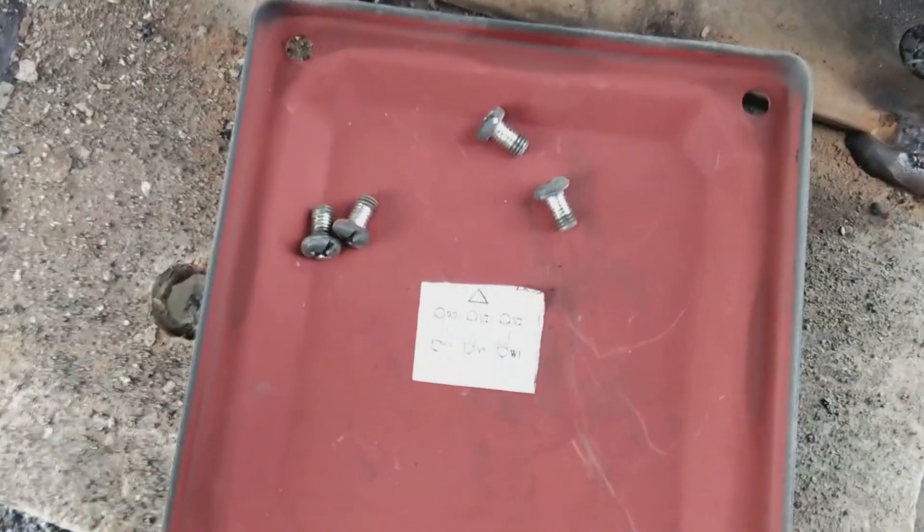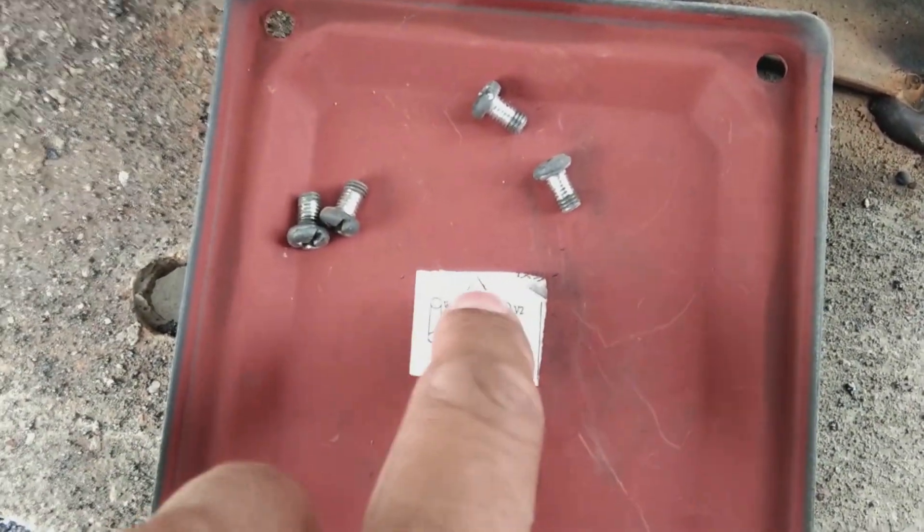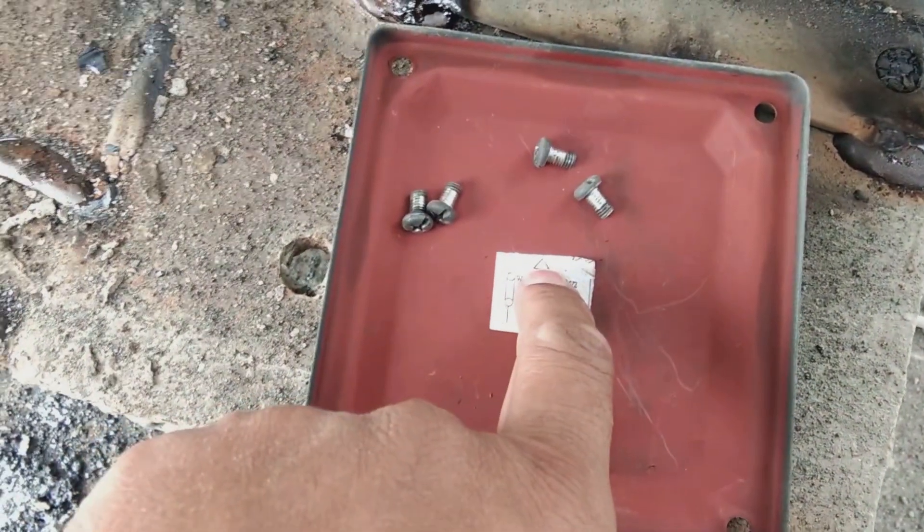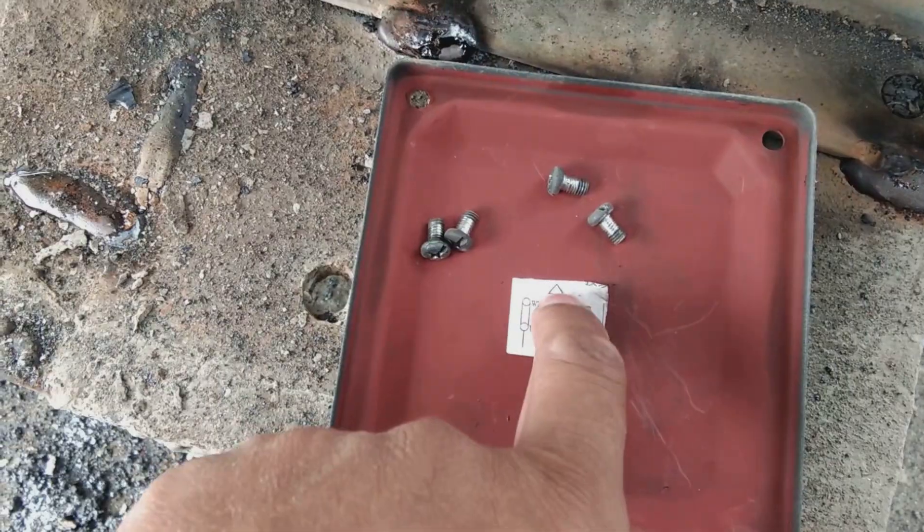The terminal box cover also shows these connections. They are labeled and the delta connection is shown here. There's a diagram for delta on this terminal box covering.